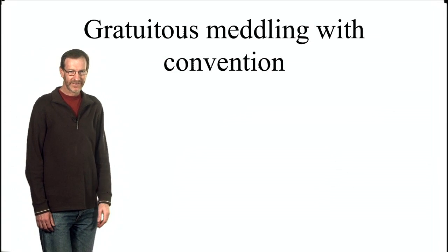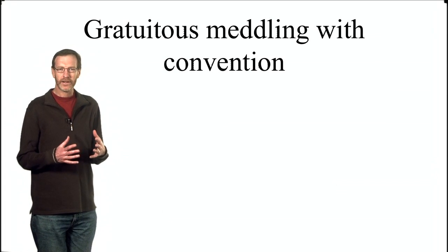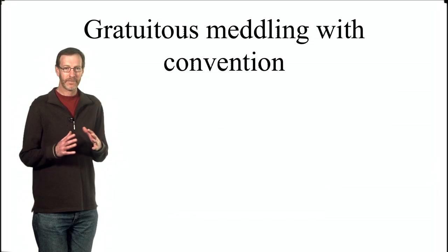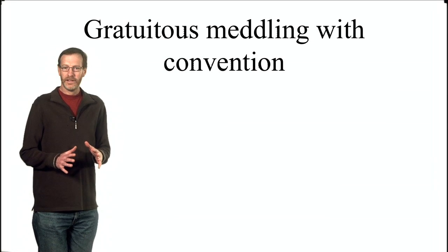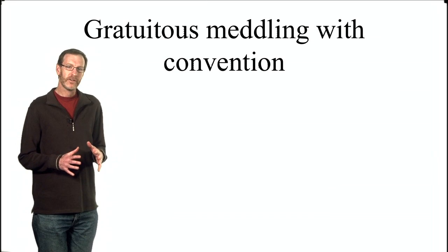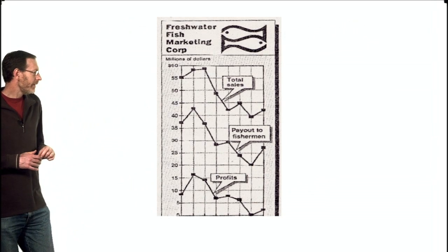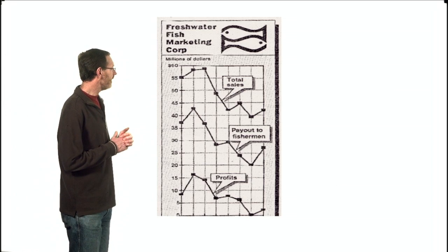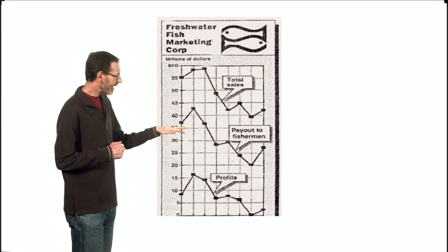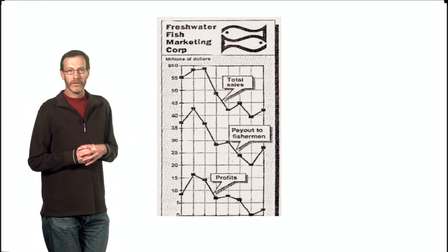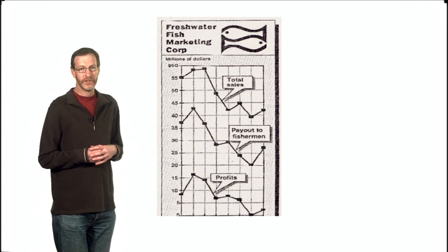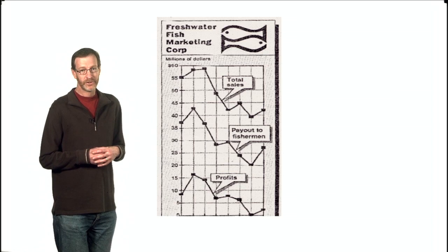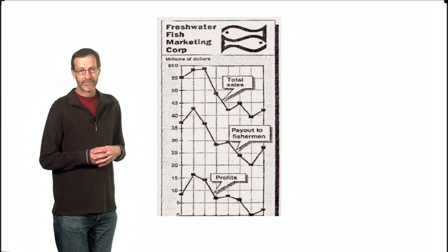One of the other things that happens when you're trying to draw graphics is you're trying to communicate information to people quickly and easily. Something you've really got to realize is that there's a lot of stuff that's built into people. And that built in stuff is going to be there whether you like it or not. So if you meddle with that, you're going to destroy the message. Here's a graphic that appeared in the Winnipeg Free Press a few years ago. It's a little piece about the Freshwater Fish Marketing Corporation. And it's looking at their total sales, their payouts to fishermen and their profits through time. When I look at this graph, I can see that it's pretty grim for the Freshwater Fish Marketing Corporation. Their total sales seem to be dropping. Their profits seem to be dropping. And the fishermen aren't getting paid as much this year as last. You think. Because we all know that down means down, right?